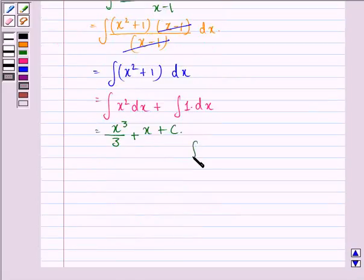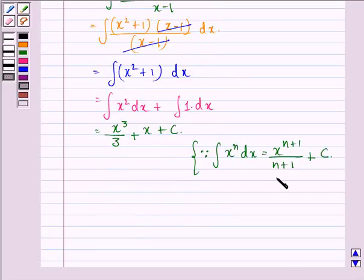This happens because the integral of x^n dx equals x^(n+1)/(n+1) + C, where n is not equal to -1. Here n is 2, so n + 1 gives us x³ divided by 3.